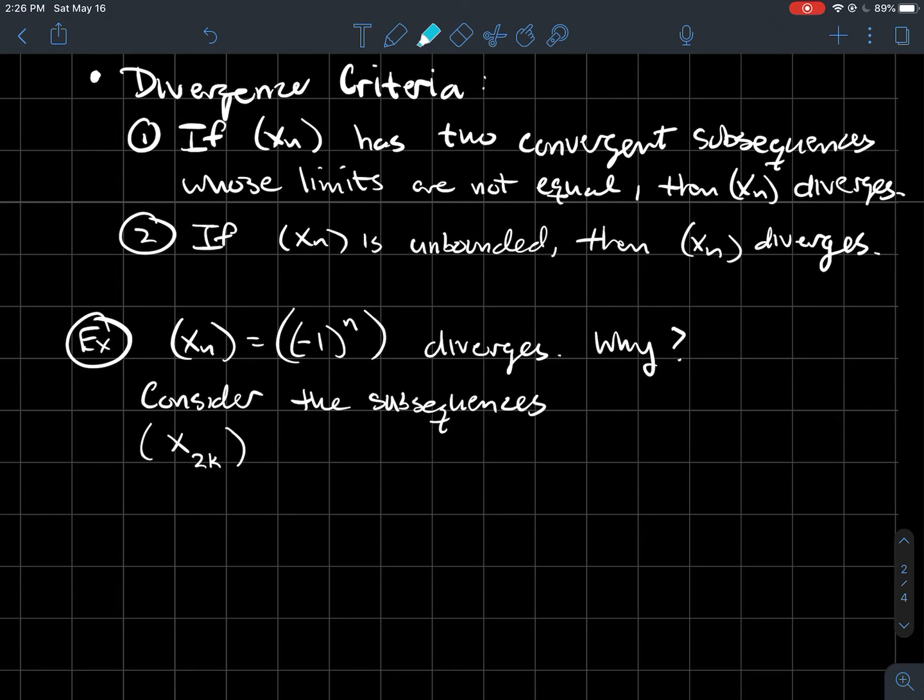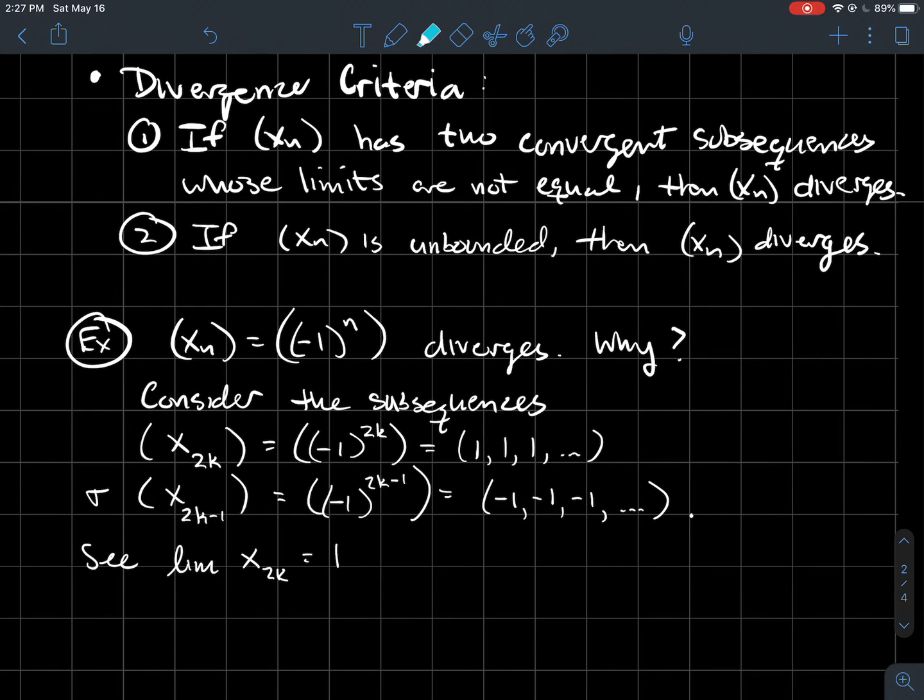what if I took all the even powers? So x sub 2k, which would be minus 1 to the 2k, which is just the constant sequence 1. And what if I took another subsequence that consisted of all the odd powers, or in other words, the odd indices? And so that would be minus 1 to the 2k minus 1, which again is the constant sequence negative 1. So the point is the limit of the even terms is 1, but the limit of the odd terms is negative 1. So what happened, we just found two subsequences whose limits don't equal.